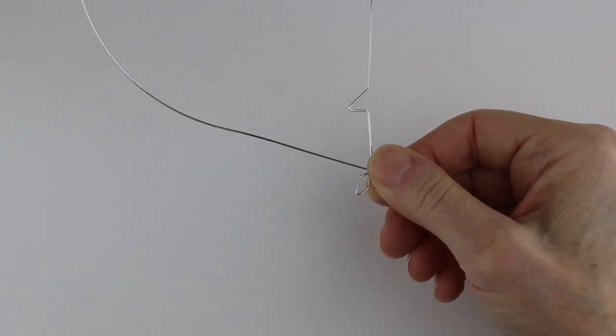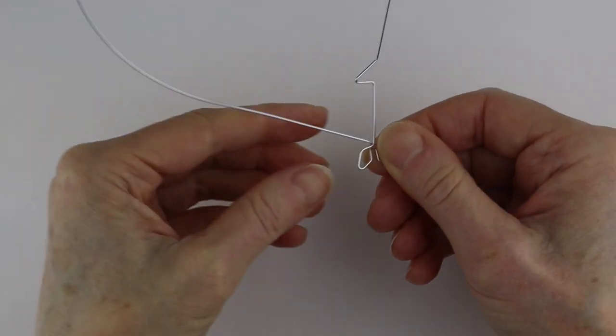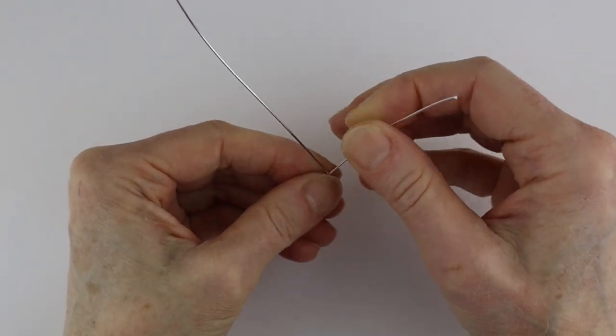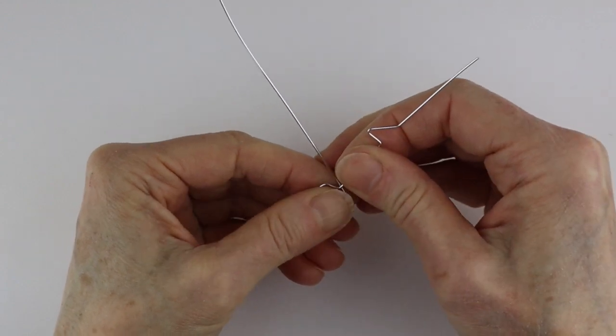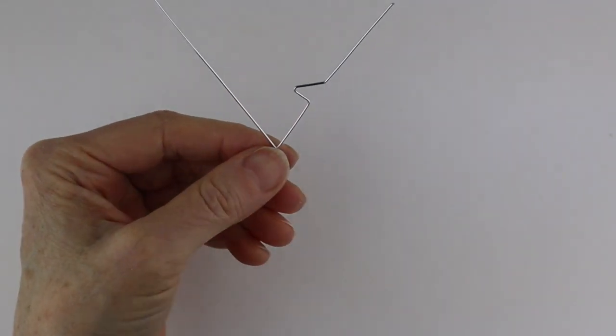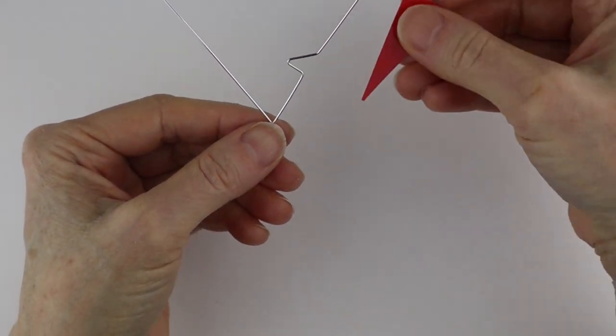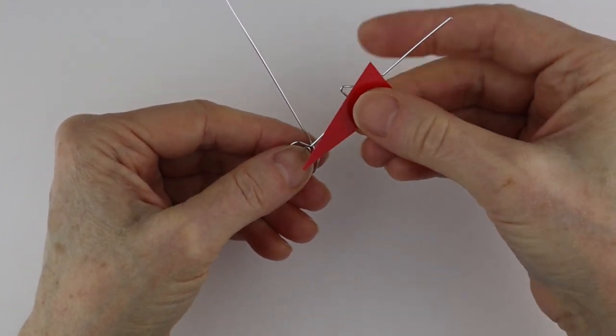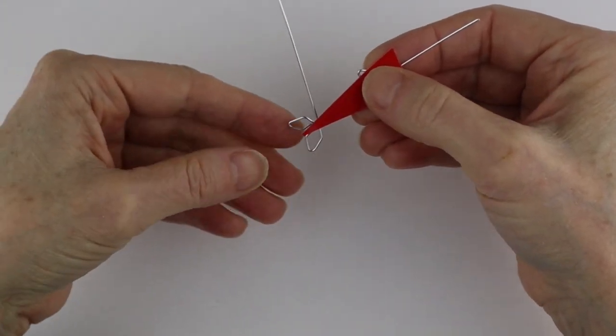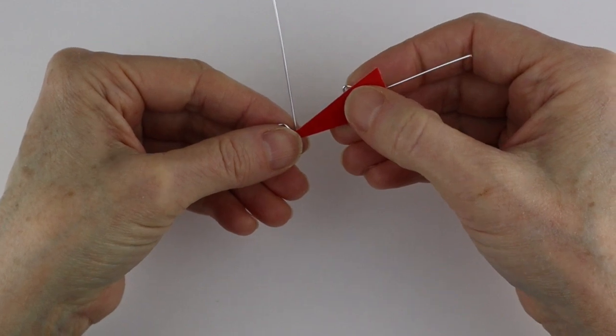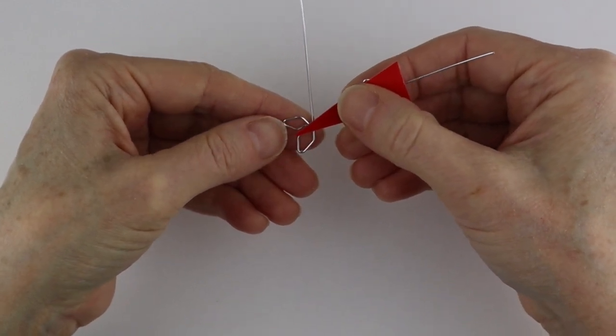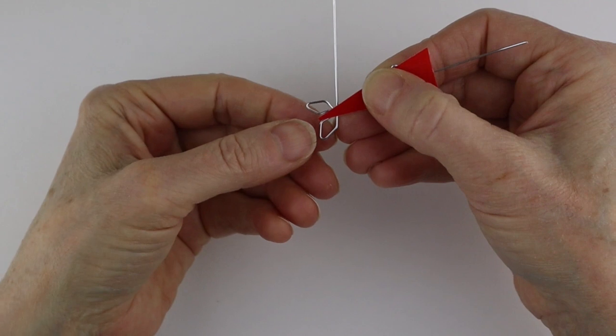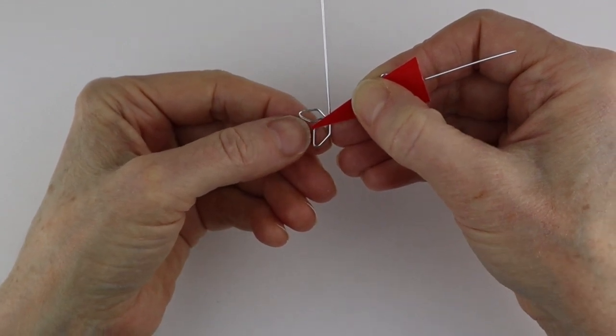Now this is the fun part, and it could take a little bit of practice to get them both the same size, but you have the basic template. You just want to be sure to try to space your turns around the same distance apart. What I like to do to judge is I put the bottom of the triangle just below this little bend here.